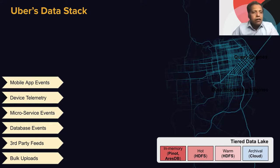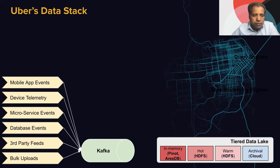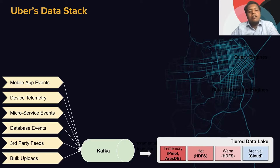Let's talk about Uber's data stack. We have many events coming in from different services — it could be mobile app events, device events, or events from a car. These events come through different online services and are captured and ingested into Kafka. We have the biggest Kafka installation in the world. We take these events from Kafka and ingest them into in-memory databases like Pinot and ASTB, or into storage such as hot storage, warm storage for HDFS, as well as the cloud. We have a tiered data lake which abstracts all of them.